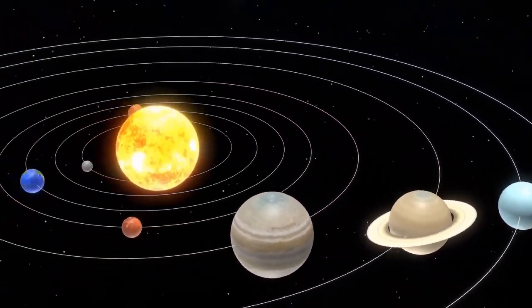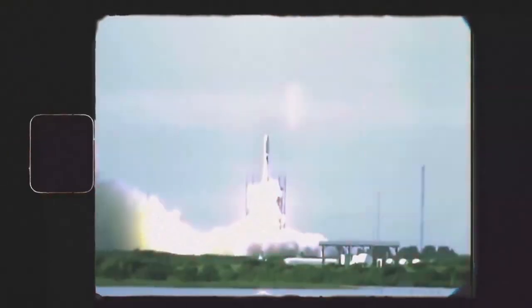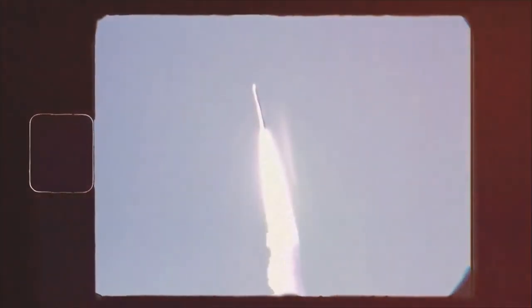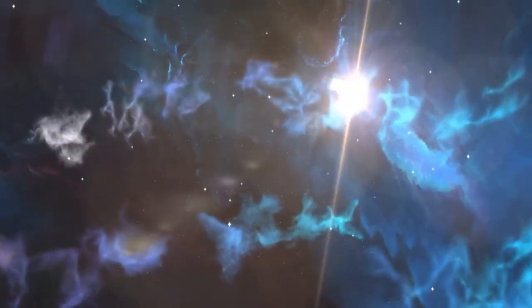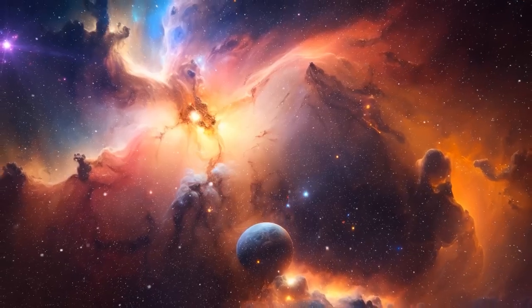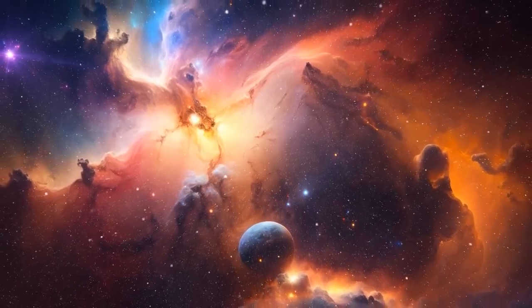The Voyager missions capitalized on a rare planetary alignment that occurs once every 107 years, allowing the spacecraft to perform gravitational slingshots from one planet to another, conserving their limited fuel. Despite launching second, Voyager 1 was the first to reach Jupiter and Saturn, focusing on these planets while Voyager 2 explored Jupiter, Saturn, Uranus, and Neptune.